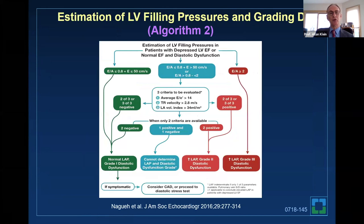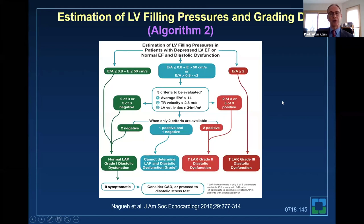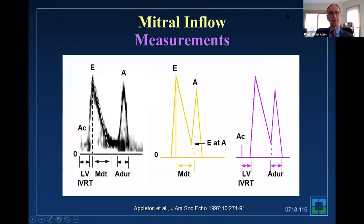The second algorithm is what most people use. To get into this algorithm, you have to have a high likelihood of diastolic dysfunction and myocardial pathology. You stratify based on E/A ratio, with grade one diastolic function on the far left and grade three on the far right. In between, E/V prime more than 14, TR more than 2.8, left atrial volume index more than 34. If you're missing parameters, this is indeterminate. The parameters most people measure include mitral inflow—measuring the height of the E-wave and A-wave, deceleration time, isovolumic relaxation time. If you want to measure left end diastolic pressure, you can measure the duration of the A-wave.